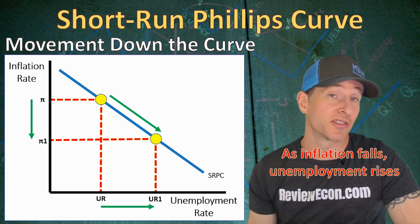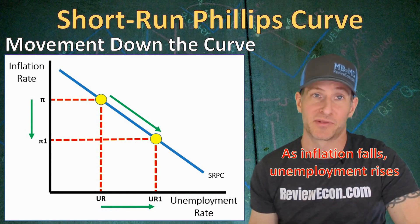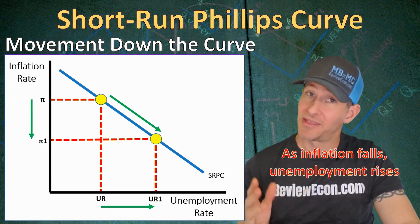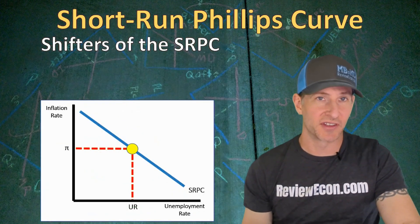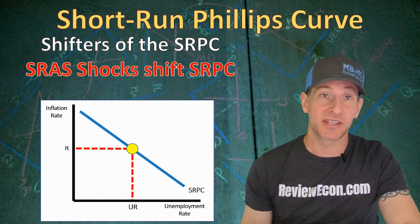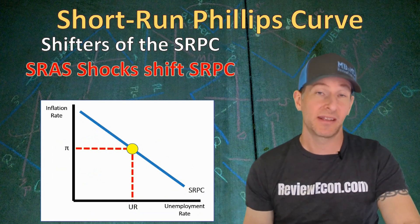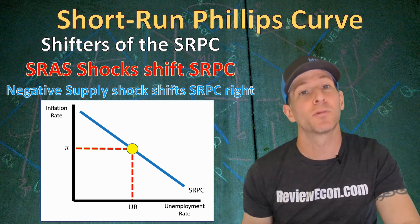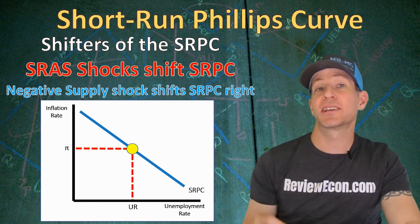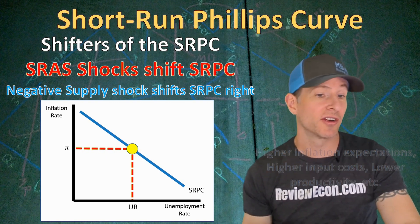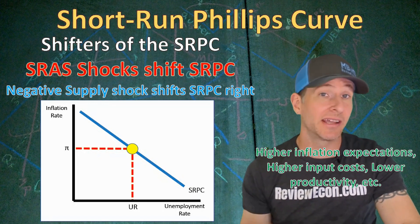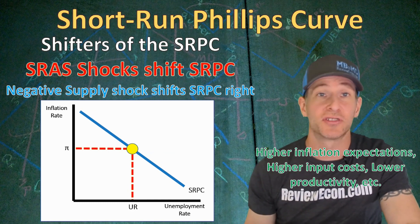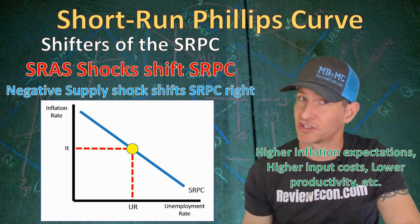So that's how the short-run Phillips Curve shows us the short-run trade-off between the inflation rate and the unemployment rate — when one increases, the other decreases, and when one decreases, the other increases. But that's only in the short-run. Next, we're going to talk about the shifters of the short-run Phillips Curve. Essentially, anything that will cause a short-run aggregate supply shock to the economy will also cause a short-run Phillips Curve shift. Negative short-run supply shocks will cause a rightward shift of the Phillips Curve. Things that cause a leftward shift of the short-run aggregate supply curve are higher inflation expectations, higher input costs, lower productivity, and other things, and so those will cause the short-run Phillips Curve to shift to the right.